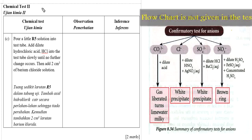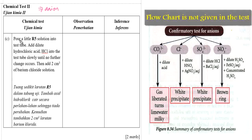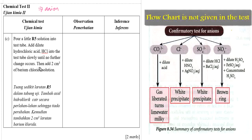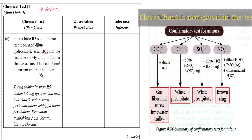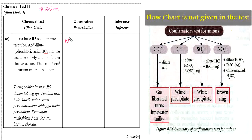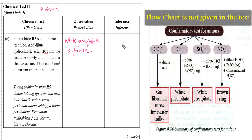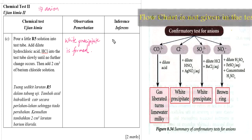Chemical test 2 is to test the anions in the R5 solution. The instruction: pour a little R5 solution into a test tube, add dilute hydrochloric acid slowly until no further change occurs, then add 2 cm³ of barium chloride solution. After you have done the chemical test, your observation is: white precipitate is formed. Once you get this observation, your inference is that sulfate ions are present.